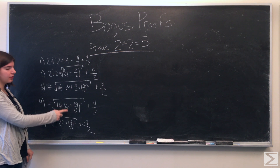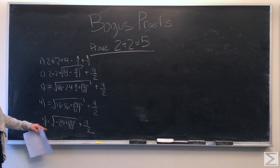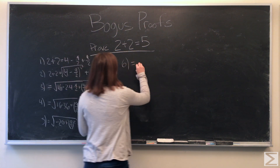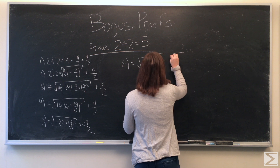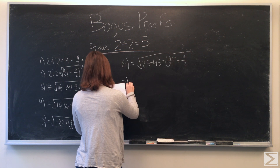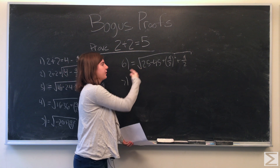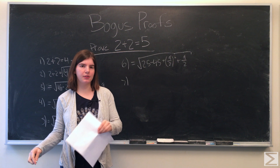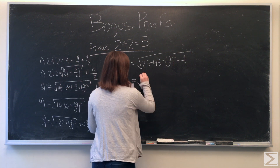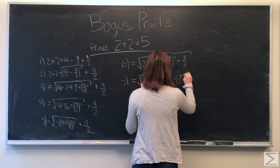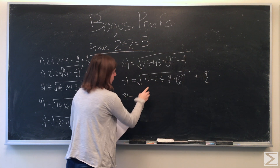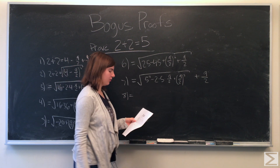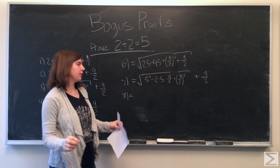And then we have 16 minus 36 is negative 20. We can rewrite negative 20 as 25 minus 45. And we're just going to rewrite 25 as 5 squared, and we'll rewrite 45 as 2 times 5 times 9 halves. We rewrote it this way so that now we can factor this polynomial. This factors to 5 minus 9 halves, quantity squared.